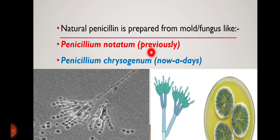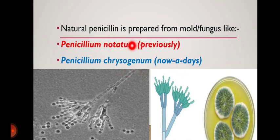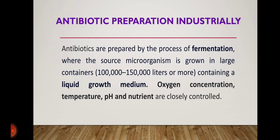Penicillium notatum is the fungus which was previously used for the preparation of penicillin, but nowadays Penicillium chrysogenum is used for the production of penicillin, because the percentage yield is much higher as compared to Penicillium notatum.